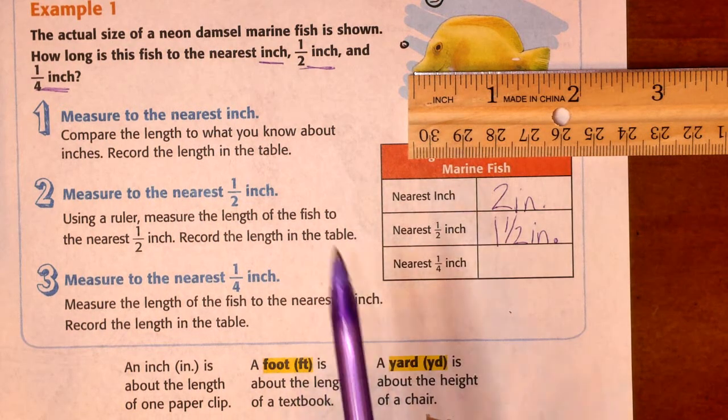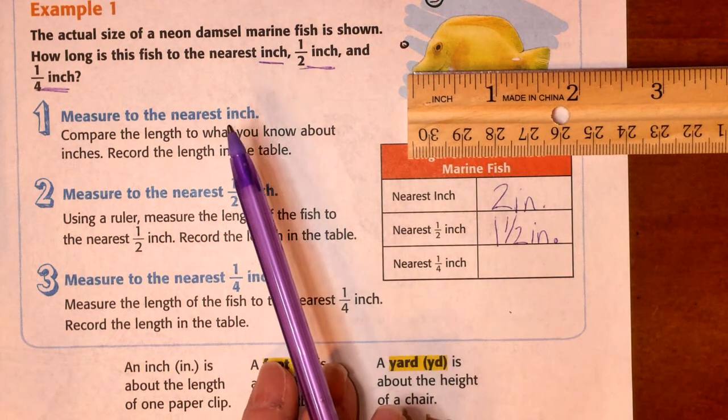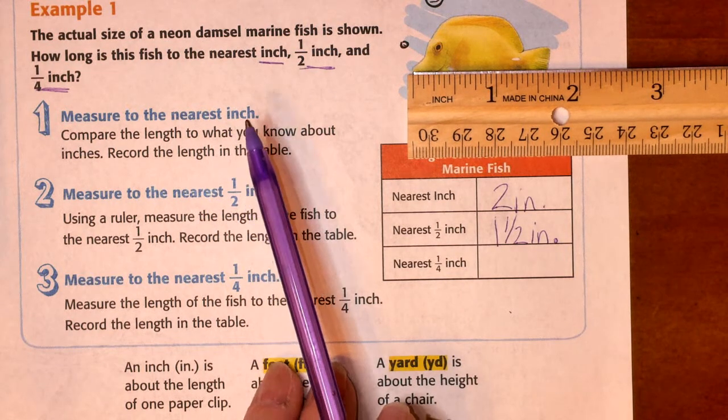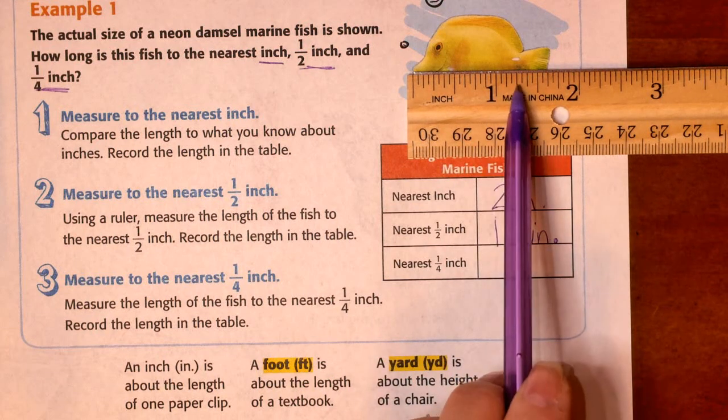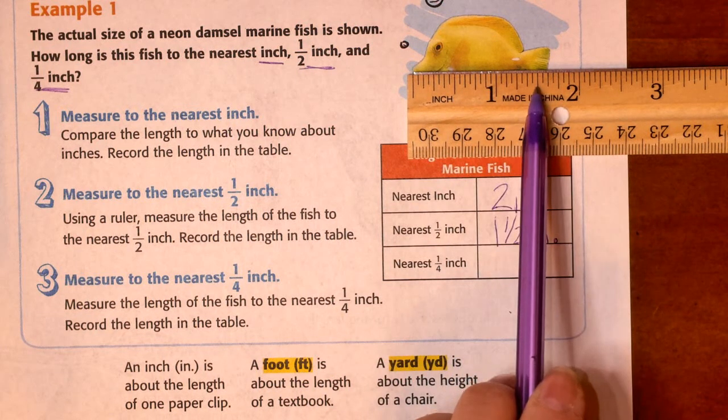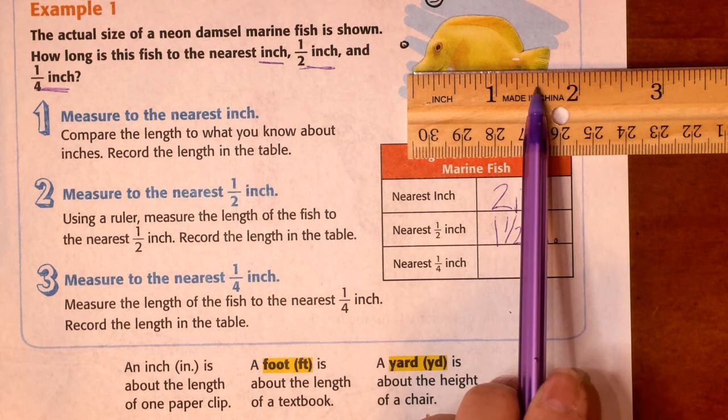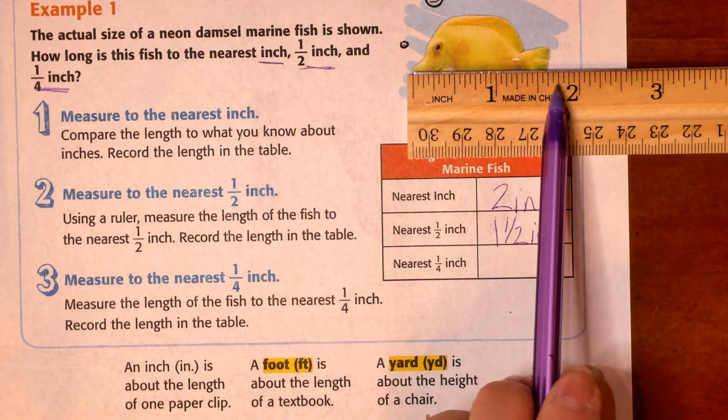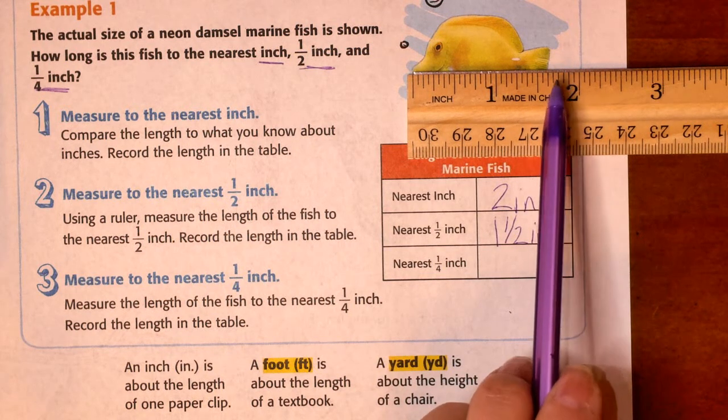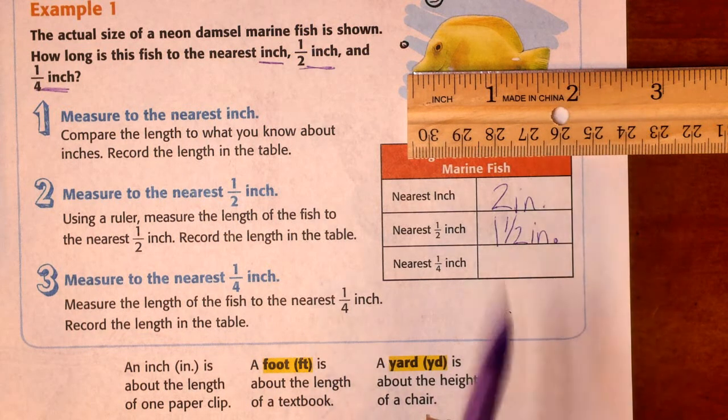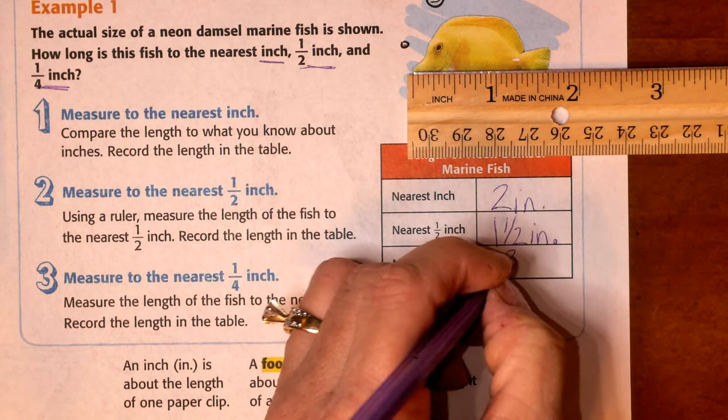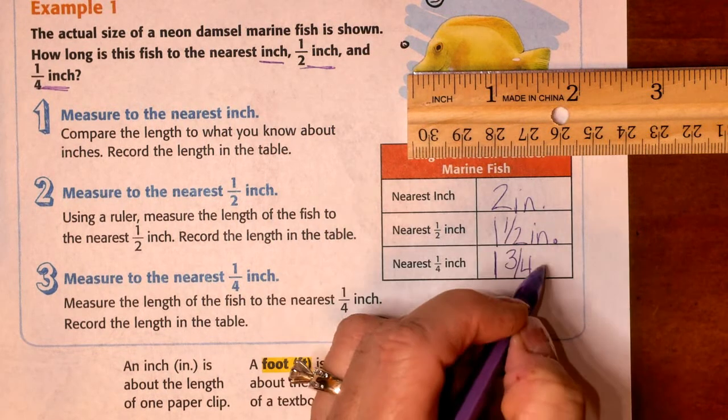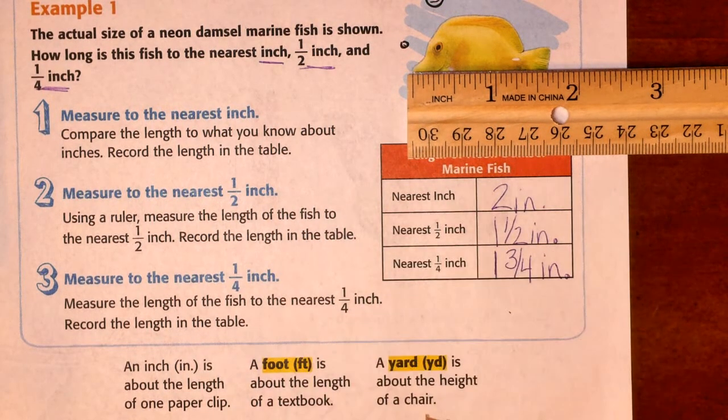Now, measuring to the nearest quarter inch. Again, we're lined up very carefully. You need to be precise. We have one whole inch. There's one quarter. There's another quarter. And there is our third quarter. And it is closest to the third quarter. So, that would be one and three quarters inches. There we go.